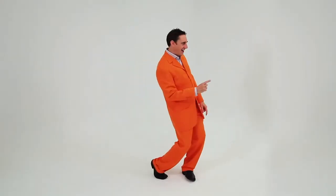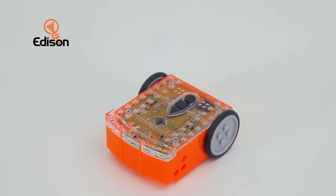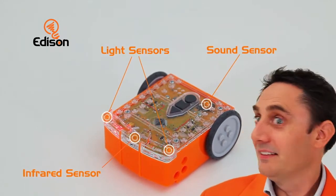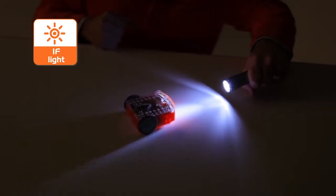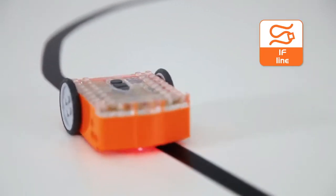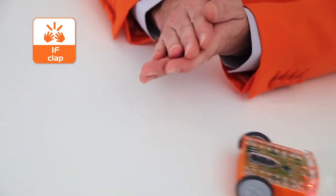So, let's see what Edison can do. For a start, Edison can see and hear by using infrared light and sound sensors. He can find his way around obstacles, sense light levels, detect lines and respond to sound commands.